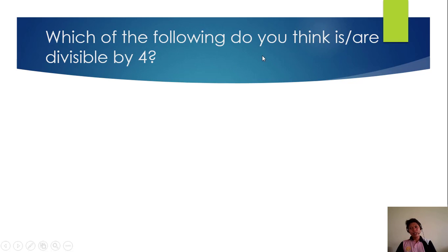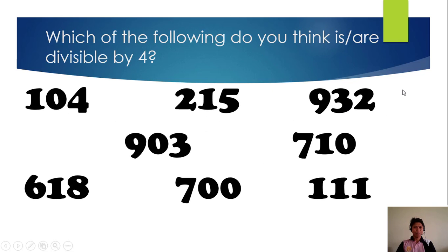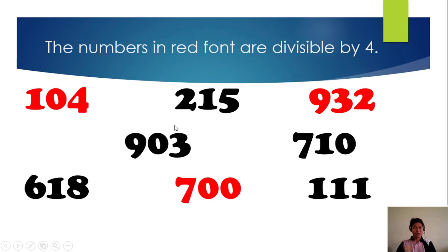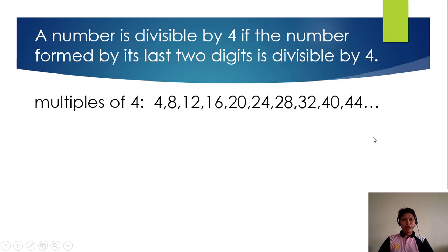Okay, that was great. This time, which of the following do you think is or are divisible by 4? Can you pick the numbers? I will give you a few seconds, or you can pause the video if you need more time. The numbers in red font are divisible by 4. We have 104, we have 932, and we have 700. And the rest are not divisible by 4. Why do you think? A number is divisible by 4 if the number formed by its last two digits is divisible by 4.